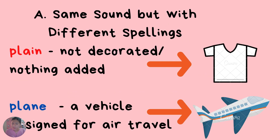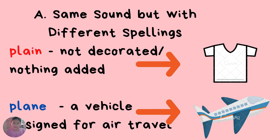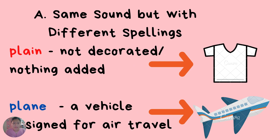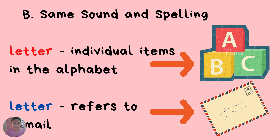Letter A: same sound but with different spellings. Plane and plane. The first word plane means not decorated or nothing added, while the second word plane means a vehicle designed for air travel. Plane and plane are homonyms because they have the same sound but with different spelling and meaning. Letter B: same sound and spelling. Letter and letter. The first word letter means individual items in the alphabet like A, B, and C. The second word letter refers to a man. Letter and letter are homonyms because they have the same sound and spelling but with different meaning.